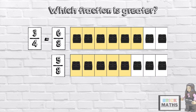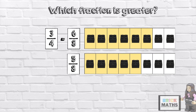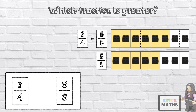So 3 quarters is equivalent to 6 eighths. Now that we've got the same denominator, we can clearly see which is the greater fraction. 6 eighths is greater than 5 eighths, which means 3 quarters is greater than 5 eighths.